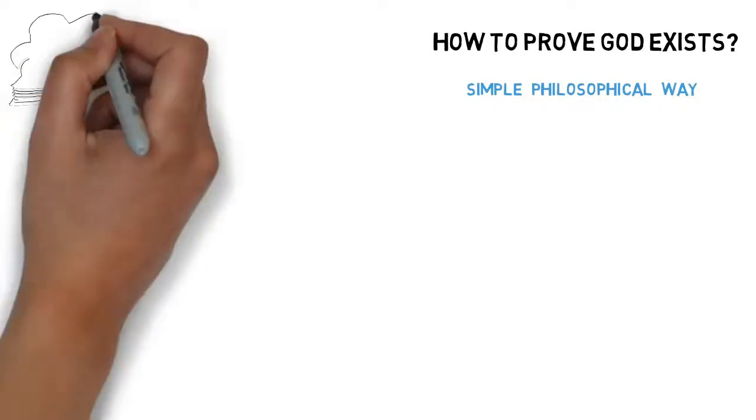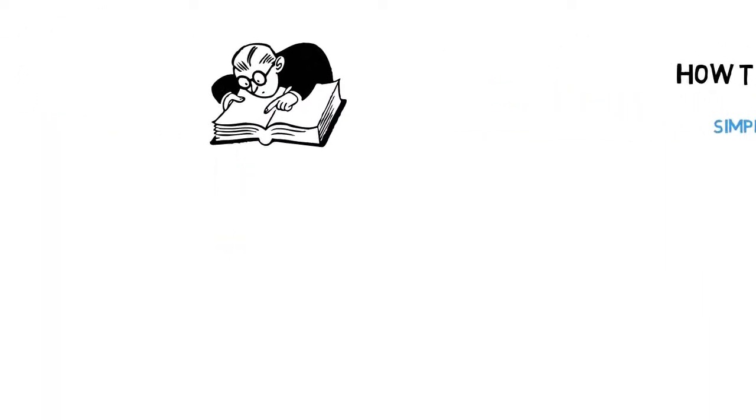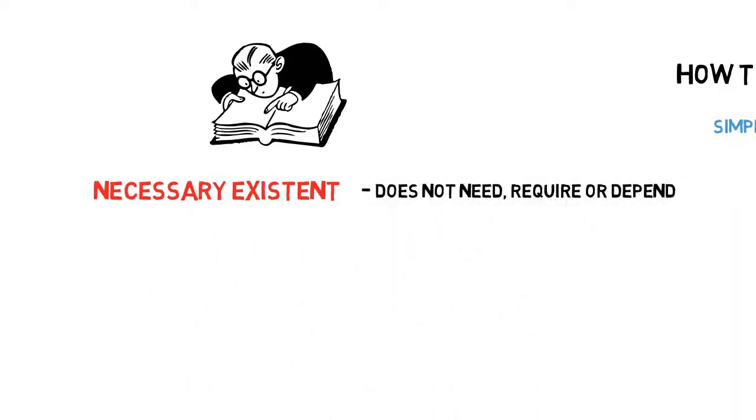How to Prove the Existence of God the Simple Philosophical Way. Let's go over some terms before we start. The word necessary existence means an existent which does not need, require or depend upon any other existent for coming into being.